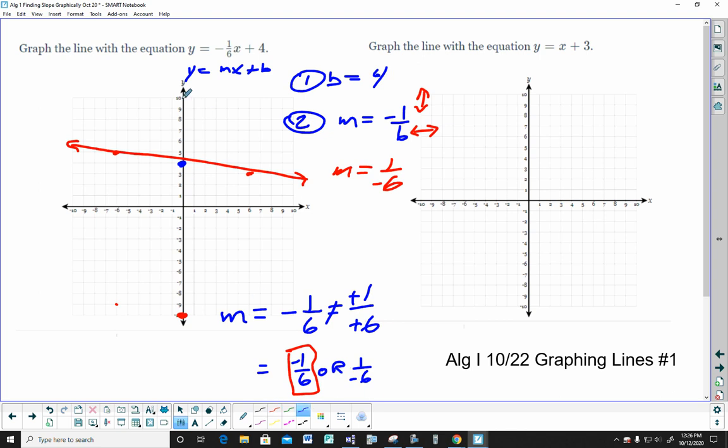Same thing would happen as if I'm up here. I can't use this one because I can't rise any place. I'd go off the graph. So, I'd have to use this one where it's down 1, right 6.